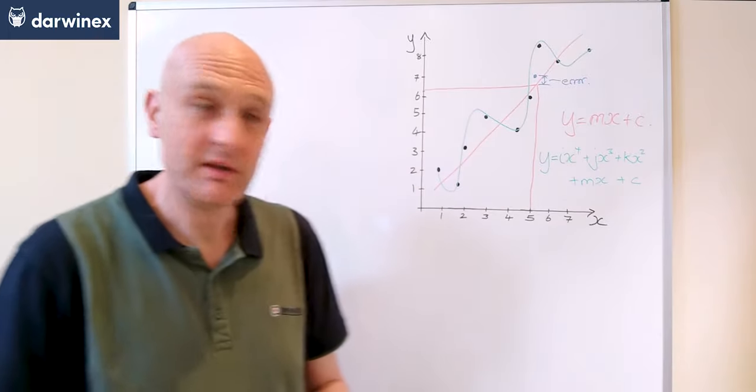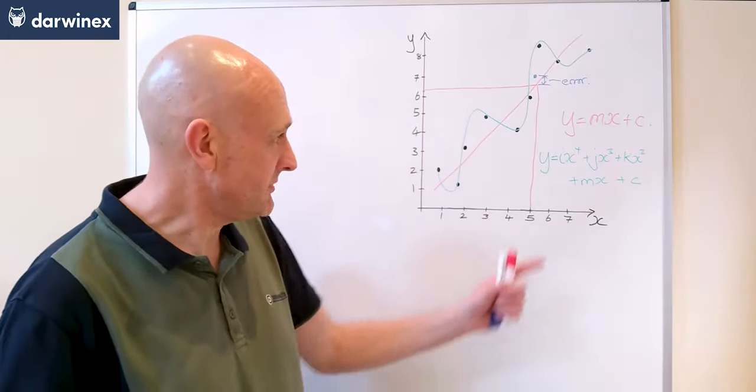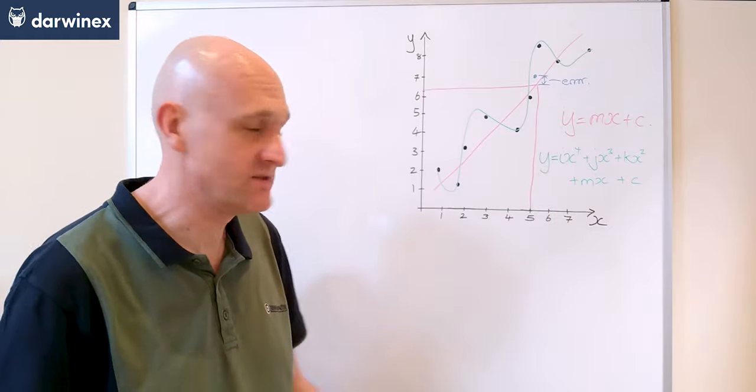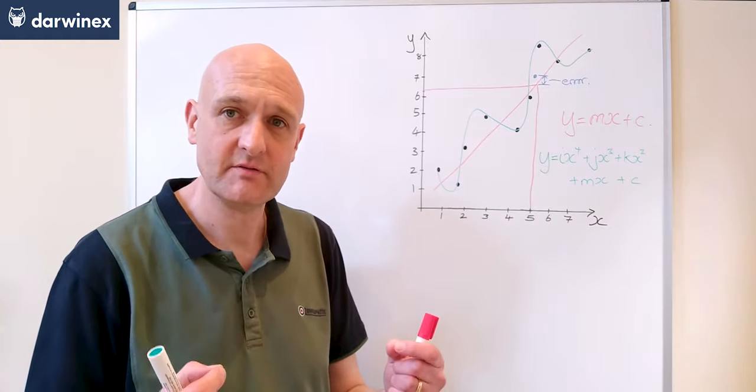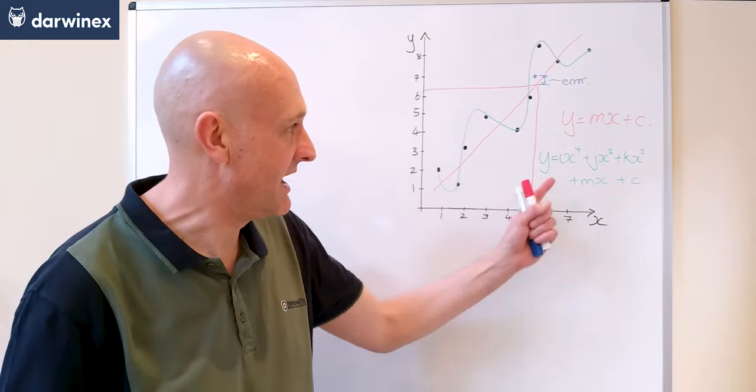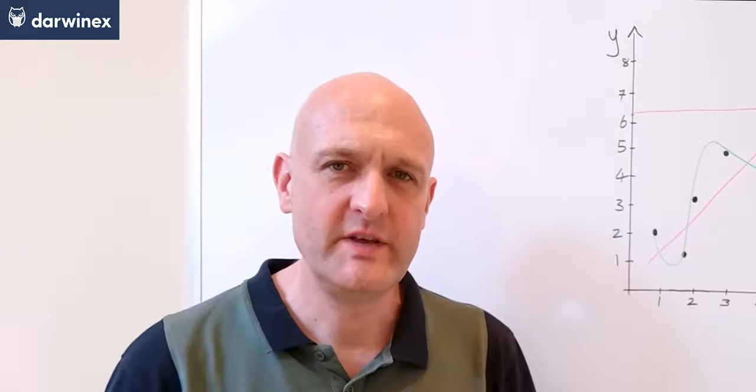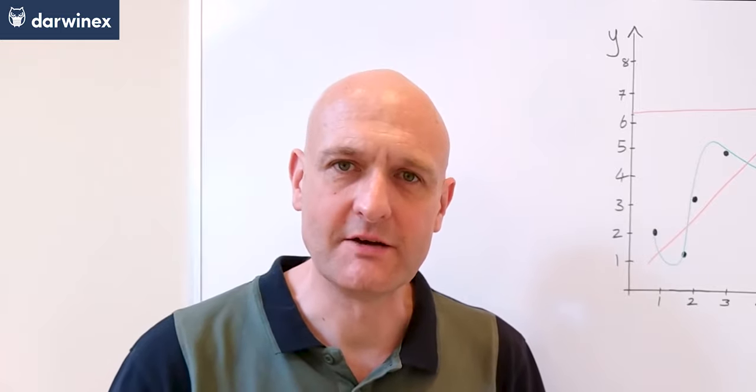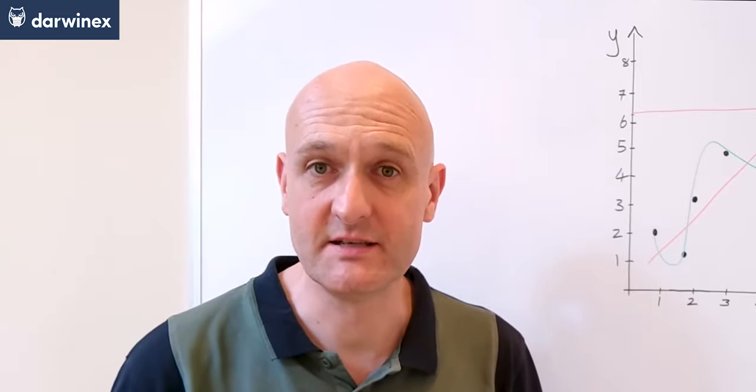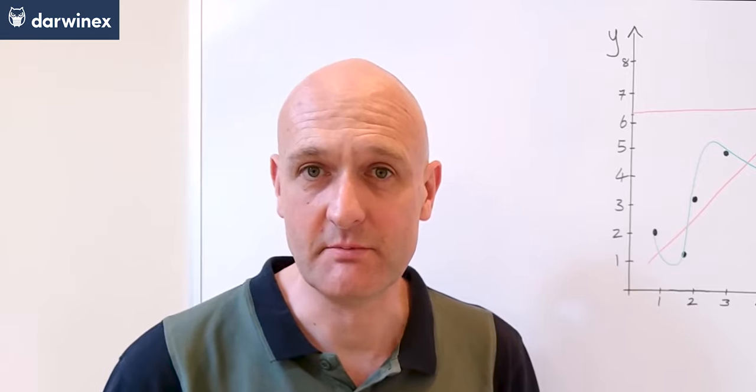So we have a polynomial expression where, in this particular case, we have five variables that dictate the model: i, j, k, m, and c. This polynomial model allows us to fit to the past data much better than the linear model did.